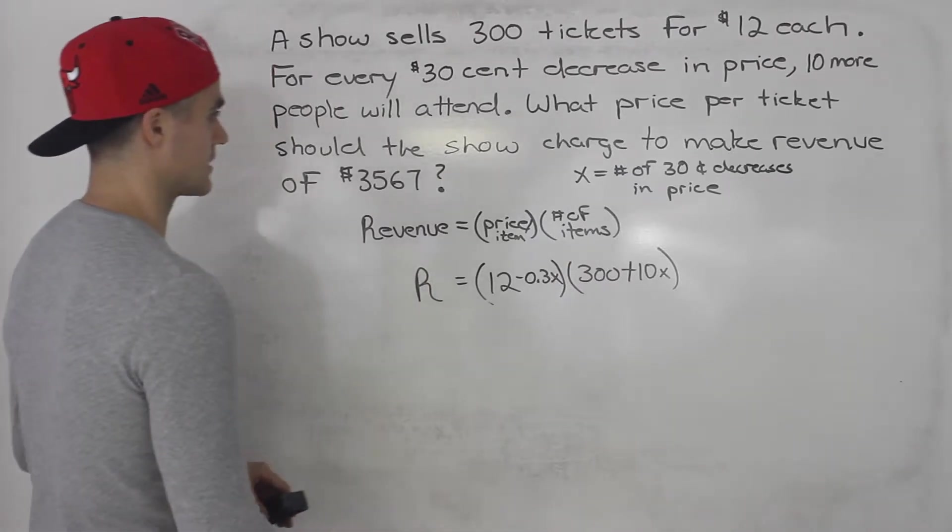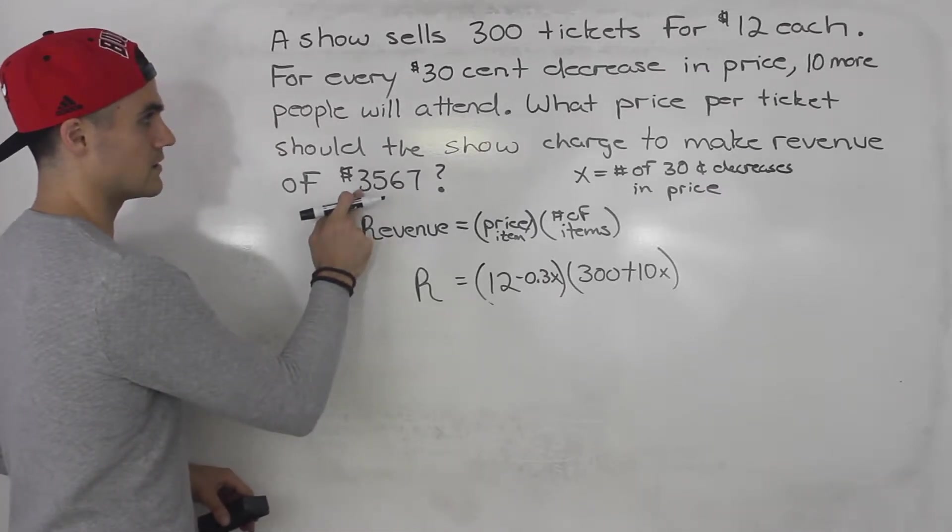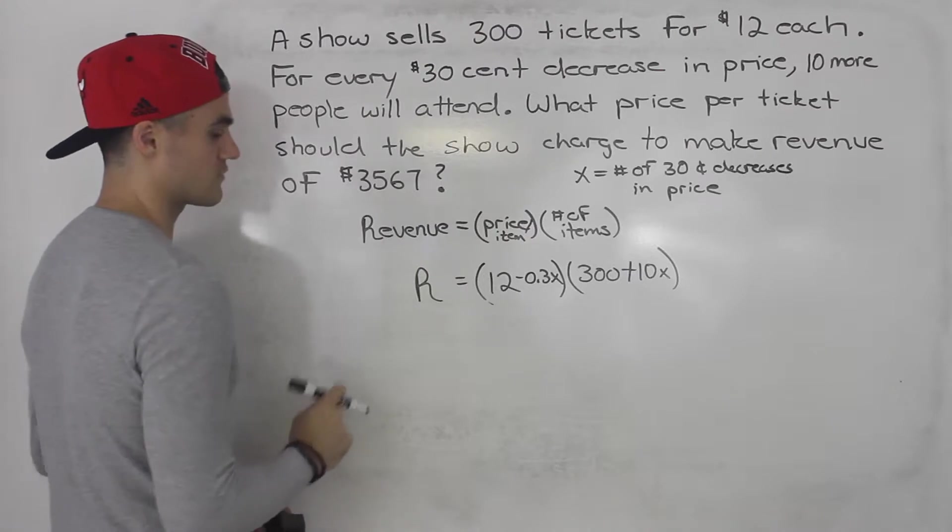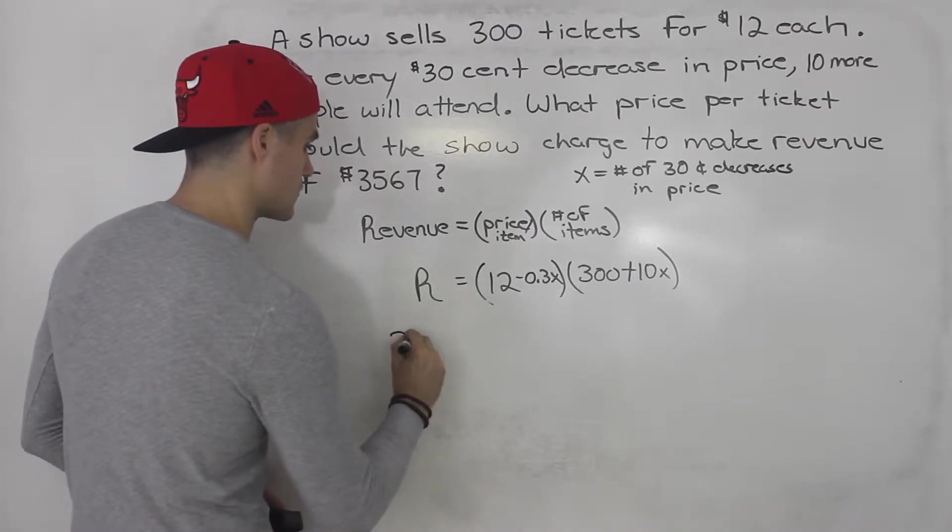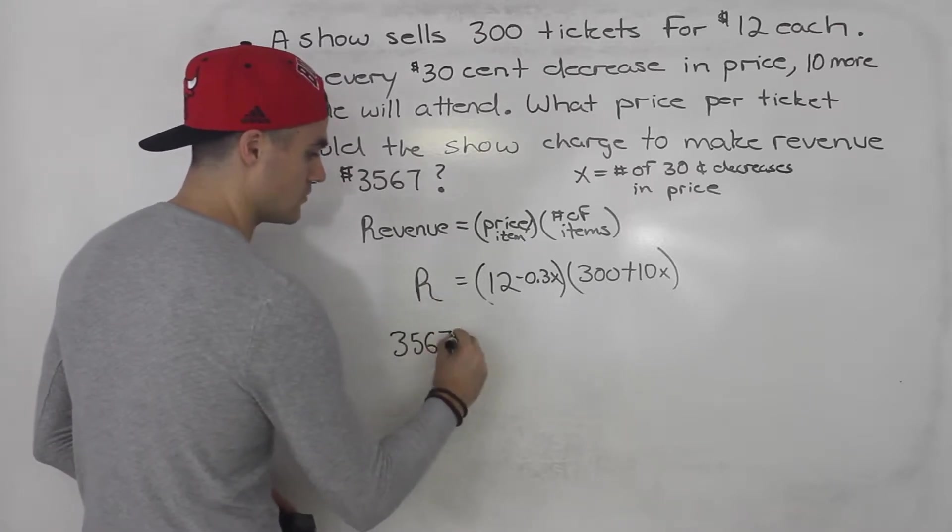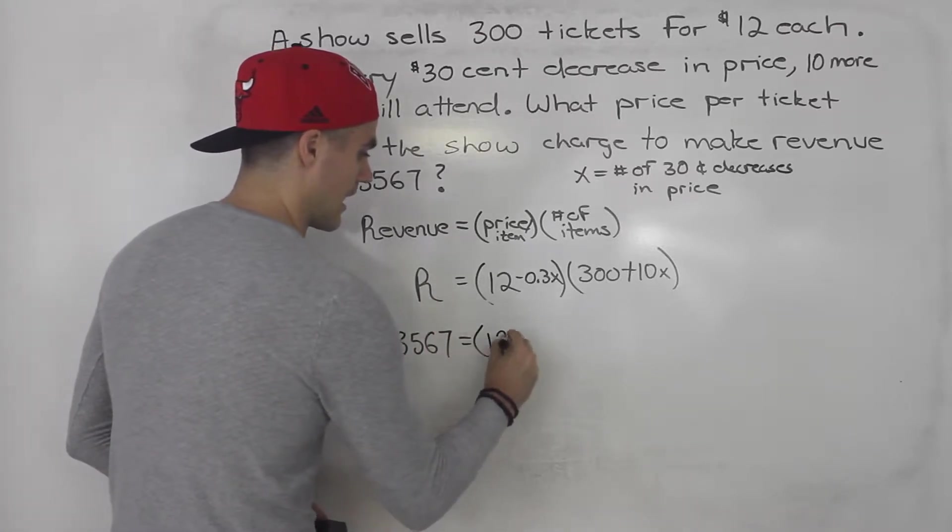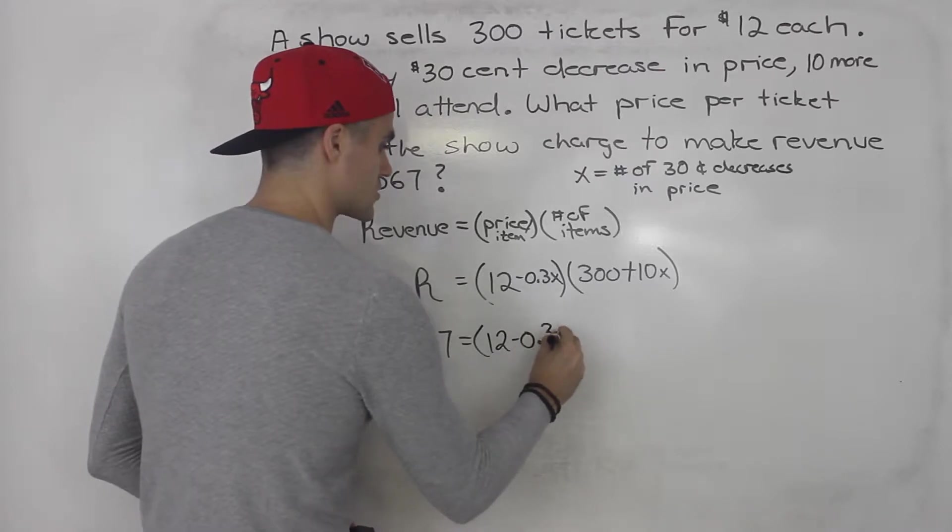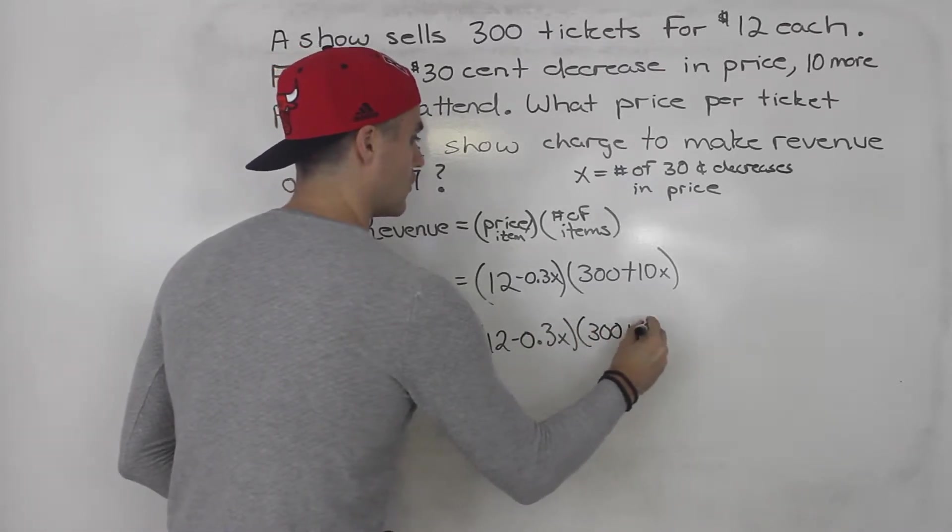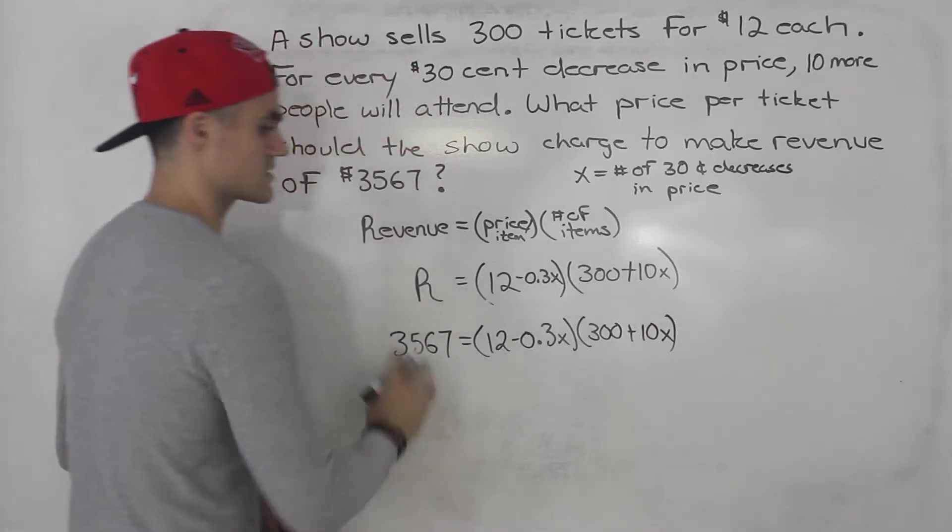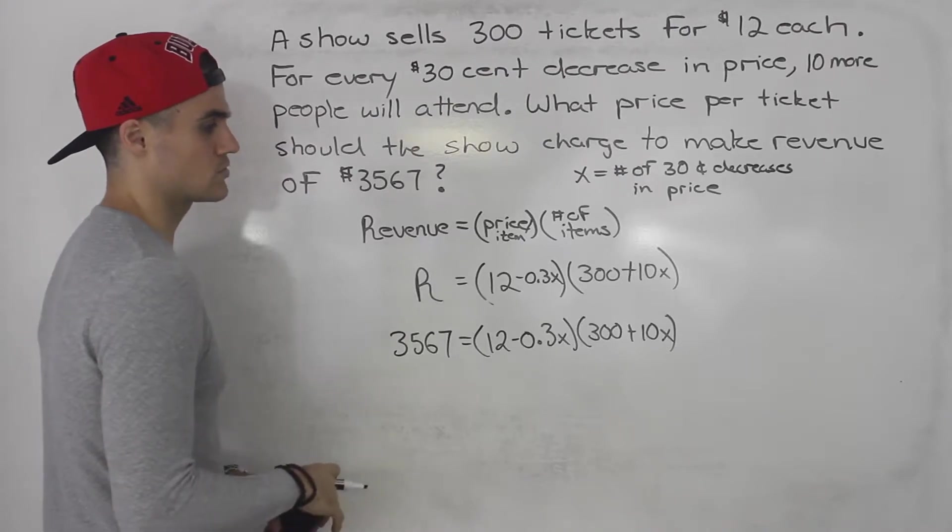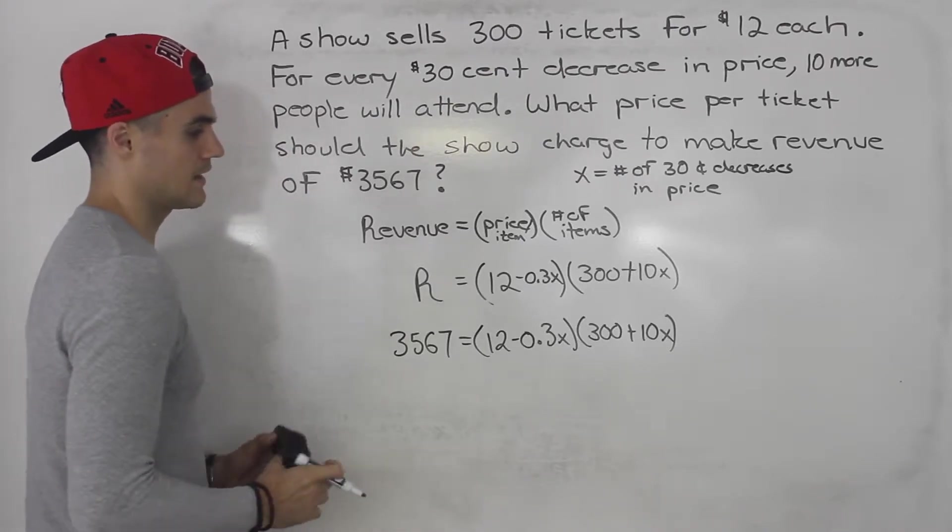And they are asking us what price per ticket should be charged in order to get a revenue of $3,567. So what we would do is we would plug in $3,567 for the revenue. And then we can just solve for x. This is just an equation now. We can expand everything, bring it over to one side, either factor or use the quadratic formula.